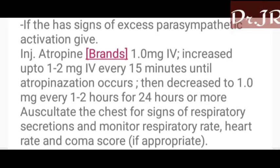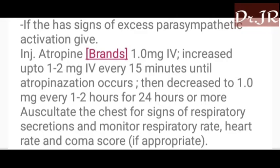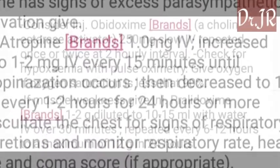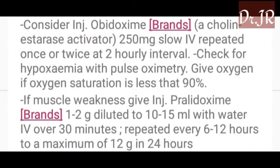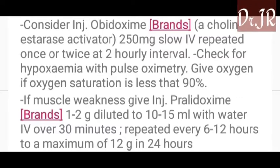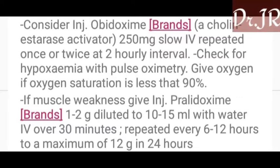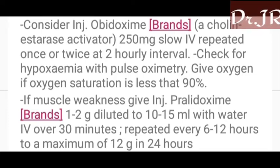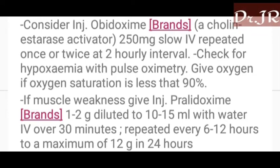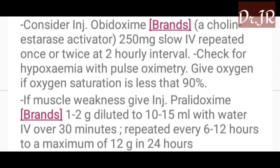Monitor respiratory rate, heart rate, and coma score. If appropriate, consider injection of pralidoxime: a loading dose of 1 to 2 g IV slowly, repeated once or twice at 4-hourly intervals. Check for hypoxemia with pulse oximetry and give oxygen if oxygen saturation is less than 90%.